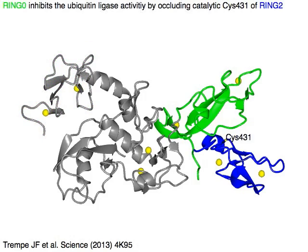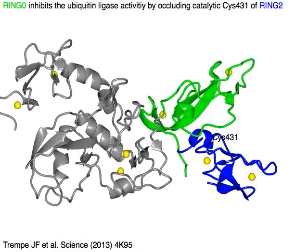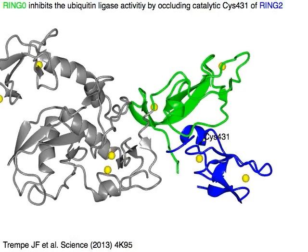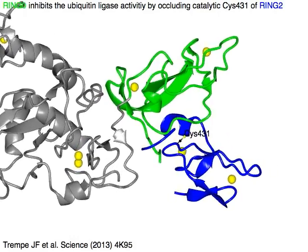Ring 0 in green inhibits the ubiquitin ligase activity by occluding the catalytic cysteine-431 of ring 2 in blue.